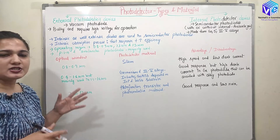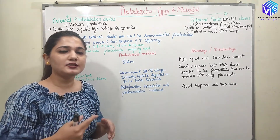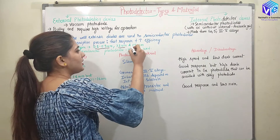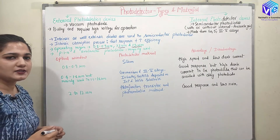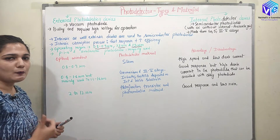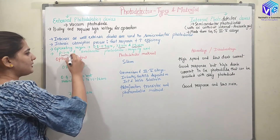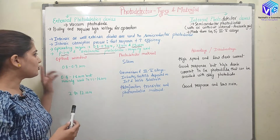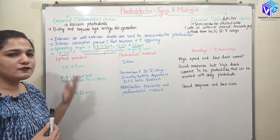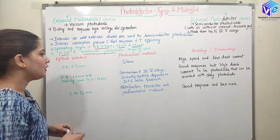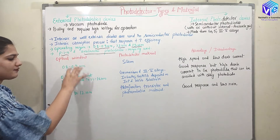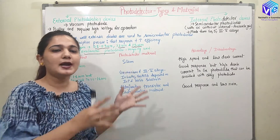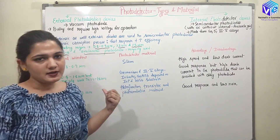The major operating regions are three: for first, second, and third generation systems, which are 0.8 to 0.9 micrometer, 1.3 micrometer, and 1.5 micrometer respectively. These are the three operating wavelength regions. We will be using PIN and avalanche photodiodes as the major semiconductor devices, and we will discuss them in detail in upcoming videos. Now we can see the different optical windows and we will talk about the photodetector material and its advantages and disadvantages at each given wavelength.